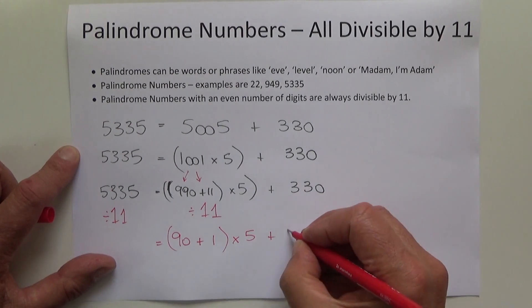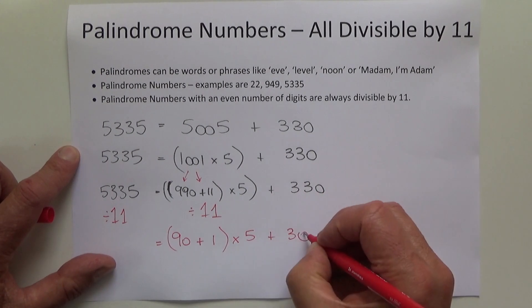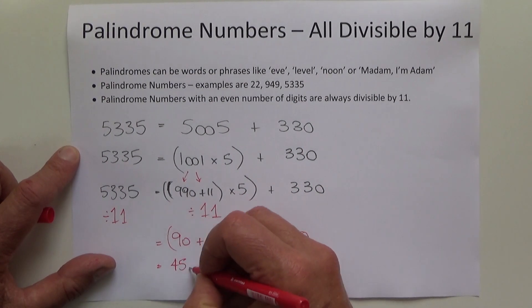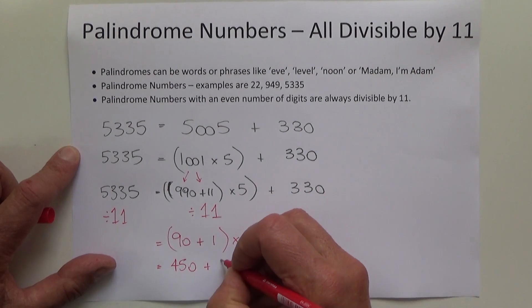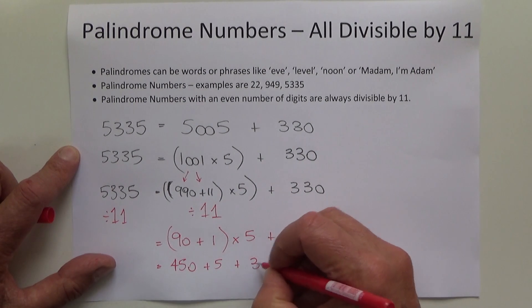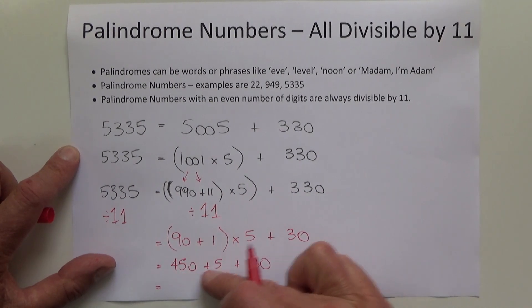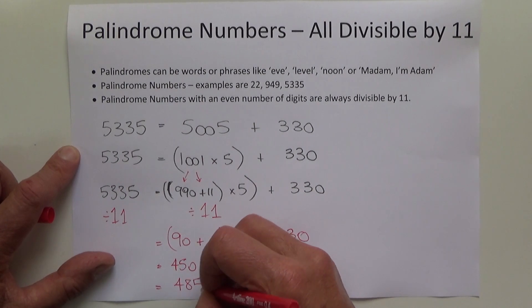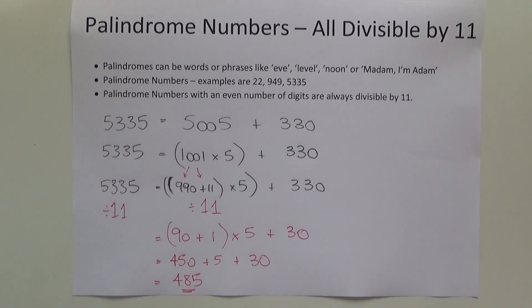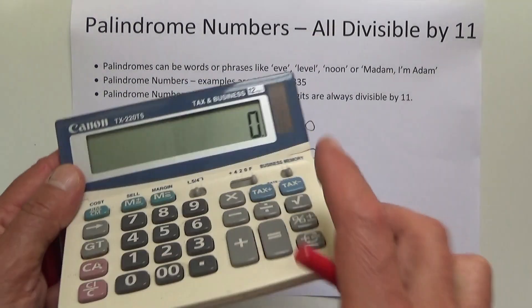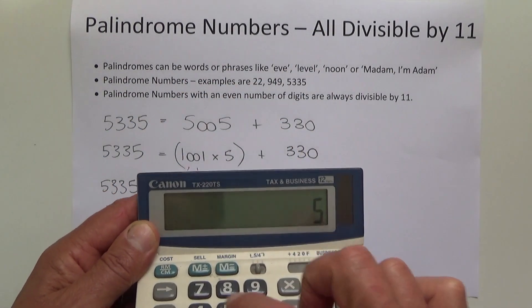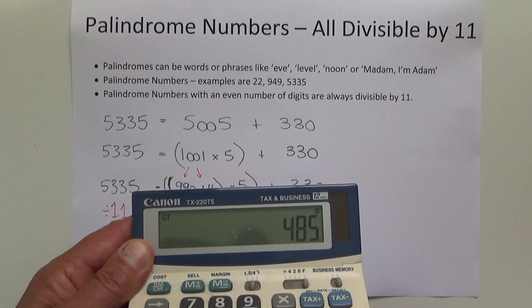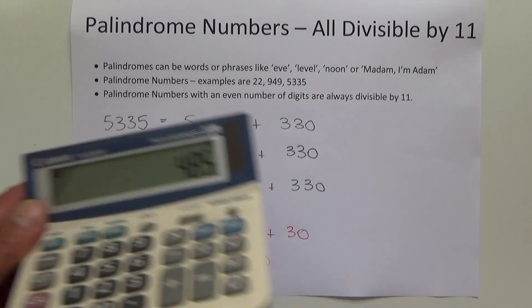5 times 90 is 450, 5 times 1 is 5, and then we add on 30. If we add that up in our head, 450 plus 5 is 455, plus 30 is 485. To prove that's correct, 5335 divided by 11 equals 485.